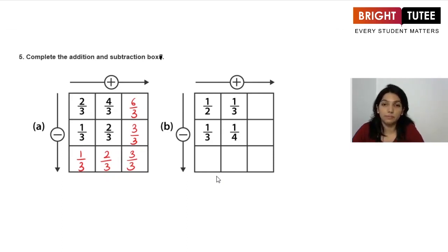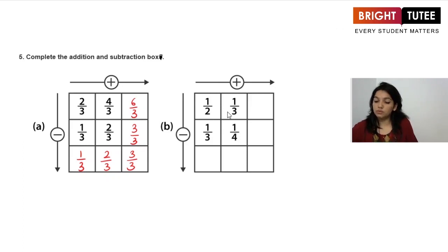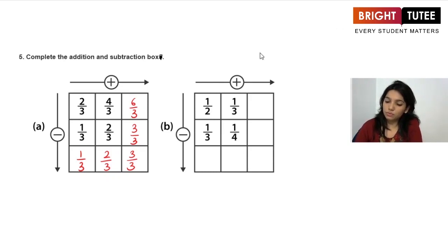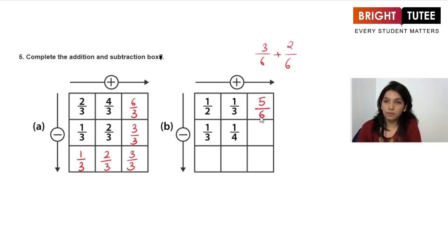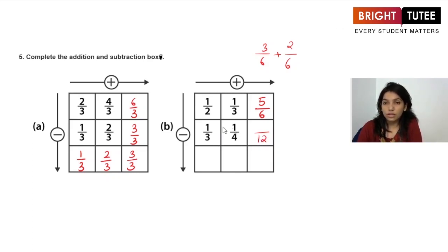The first box was simple with all like fractions. Now come unlike fractions. 1/2 plus 1/3: LCM of 2 and 3 is 6, giving 3/6 plus 2/6, which equals 5/6. For 1/3 plus 1/4: LCM is 12, giving 4/12 plus 3/12, which equals 7/12.